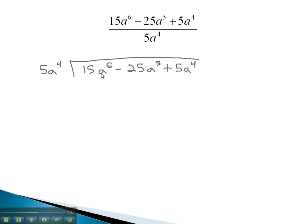Again, we will start dividing our front term, 15a to the 6th by 5a to the 4th. That will reduce to 3a squared.